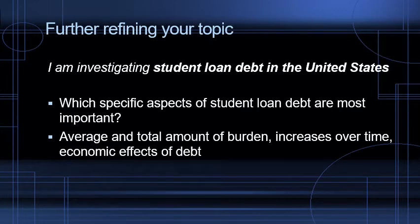This is the point at which we can start further refining our topic. We've had the basic statement: 'I'm investigating X because I want to find out why, in order to help my readers do Z.' Now we can make that more specific. If we started with 'I'm investigating student loan debt in the United States,' we can now ask which specific aspects are most important — maybe it's the average and total debt burden, how it's increased over time, or the economic effects of the debt. So we go from 'student loan debt' to a specific aspect of it.